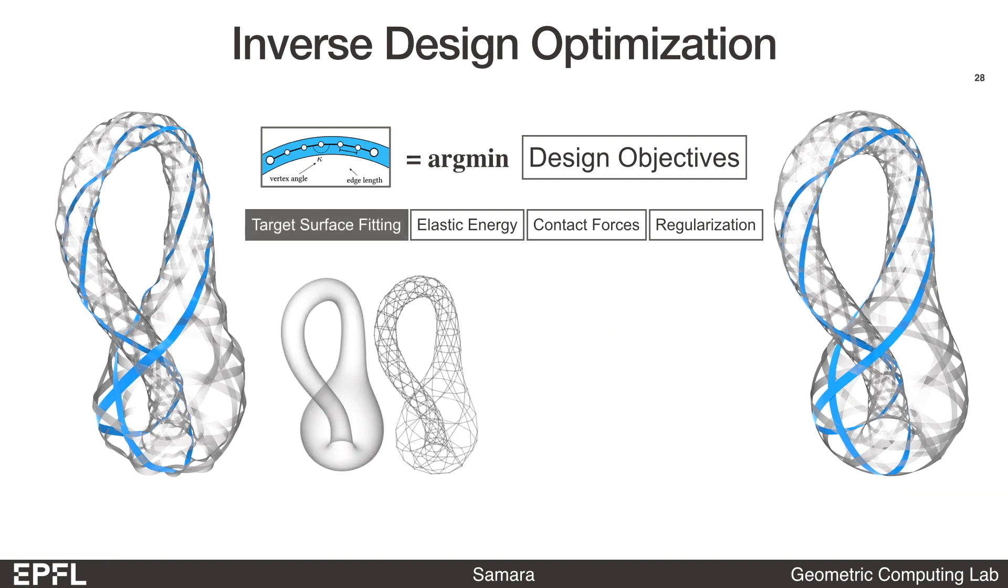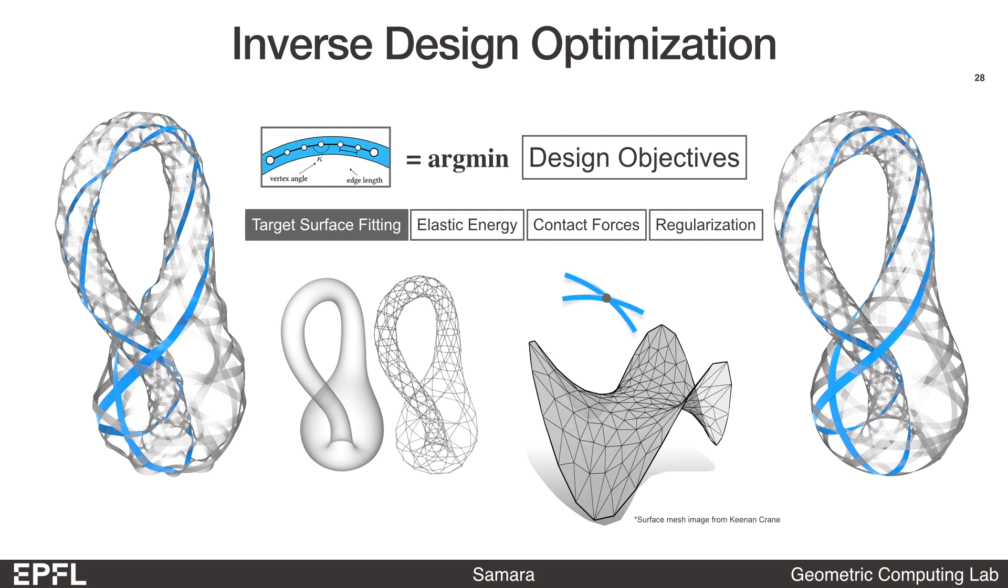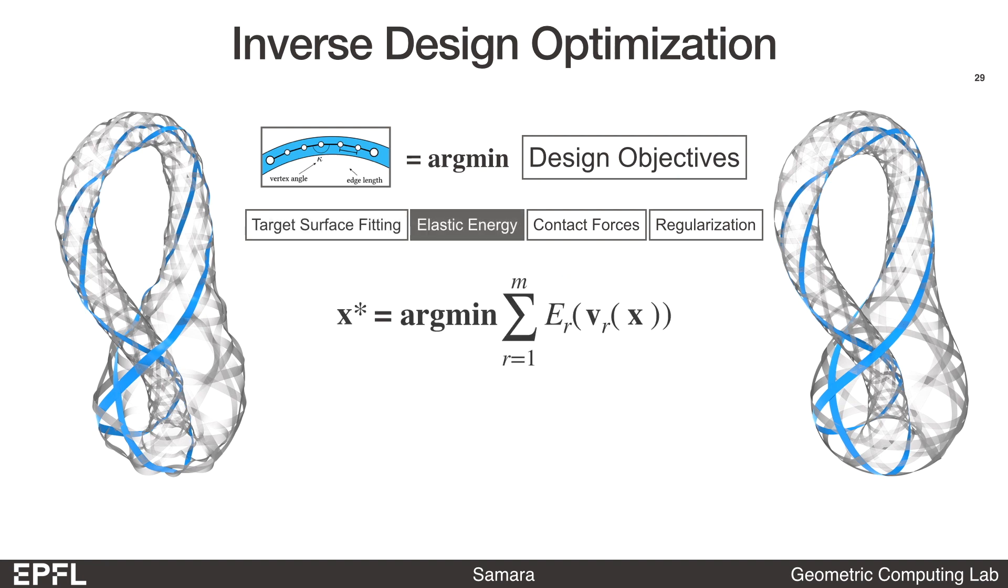For the target fitting objective, we compute the shortest distance from the ribbon to the target surface by projecting ribbons to the target mesh. We also use the distance from the ribbon to the input crossing positions as a regularization. Under this term, the ribbons are allowed to slide on the target surface during the optimization, but not away from it.